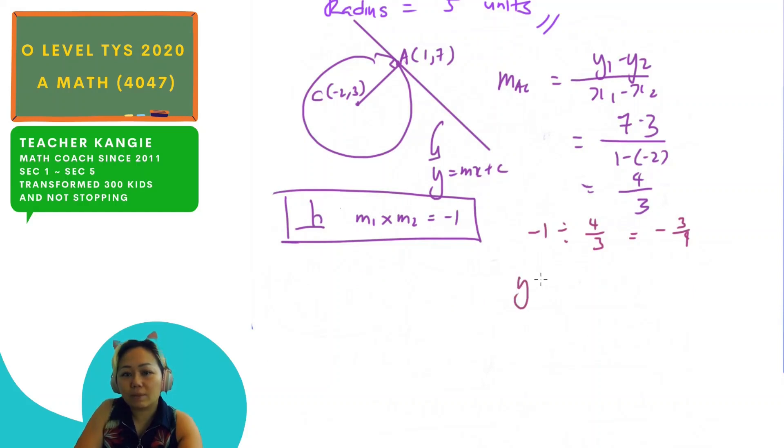So now equation of the tangent now become y equals to minus 3 quarter x plus c. So to find c, you need to sub a point which is on the line. And the only point that you have is 1, 7. So now I'm going to sub in 1, 7. So it becomes 7 equals to minus 3 quarter times 1 plus c. So after subbing in, you will get c equals to 31 over 4.